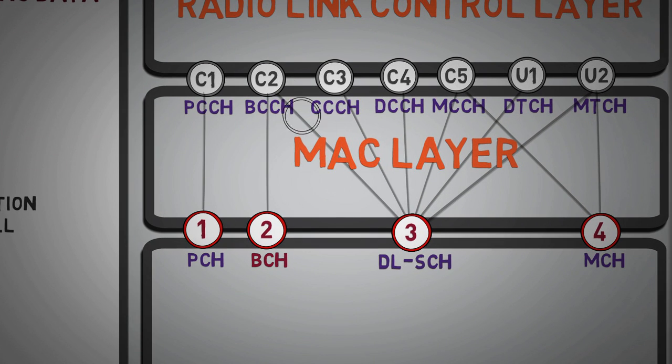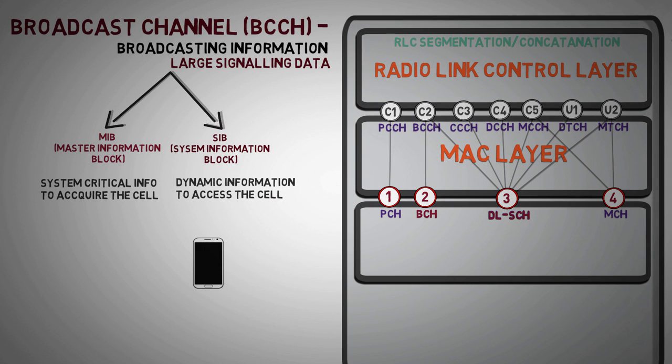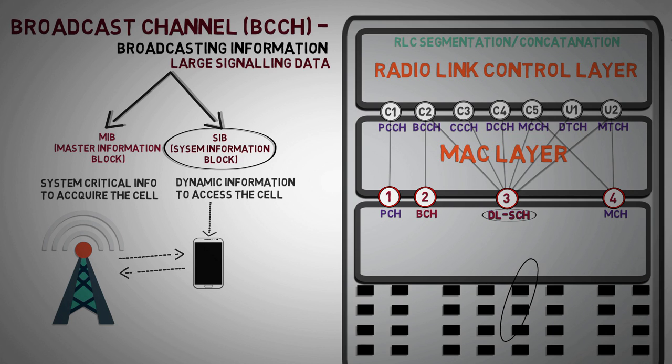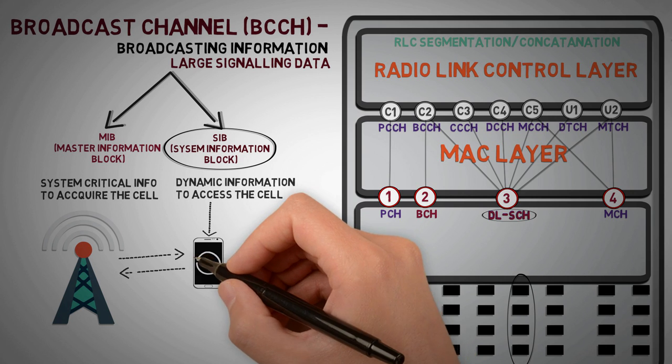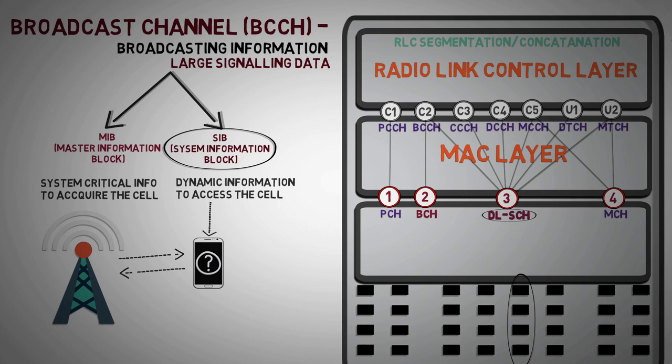So it passes through downlink shared channel. In order to maintain healthy radio connection between user and network, user should have dynamic information of that cell, and for that user has to decode SIB from downlink shared channel, which transmitted to resource element on physical resource block. But user is unaware of this physical resource block, so user has to decode MIB first, which gives system critical information along with scheduling information for SIB, then SIB can be decoded.